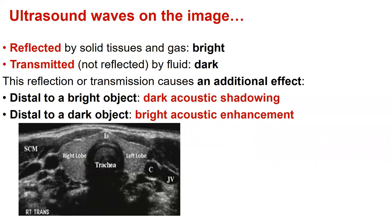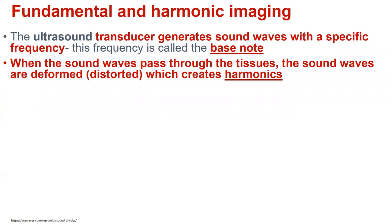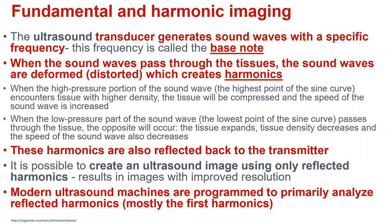What can we see on the ultrasound image? If the ultrasound waves are reflected by a solid tissue or gas, it will be bright on the screen. If they are transmitted by fluids, it will be dark on the screen. This reflection or transmission causes an additional effect: at a totally bright object we will see dark acoustic shadowing, and at a totally dark object we will see bright acoustic enhancement. The ultrasound transducer generates sound waves with a specific frequency called the base note. When the sound waves pass through the tissues, they are deformed or distorted, which creates harmonics. These harmonics are also reflected back to the transmitter, and modern ultrasound machines are programmed to primarily analyze these reflected harmonics.